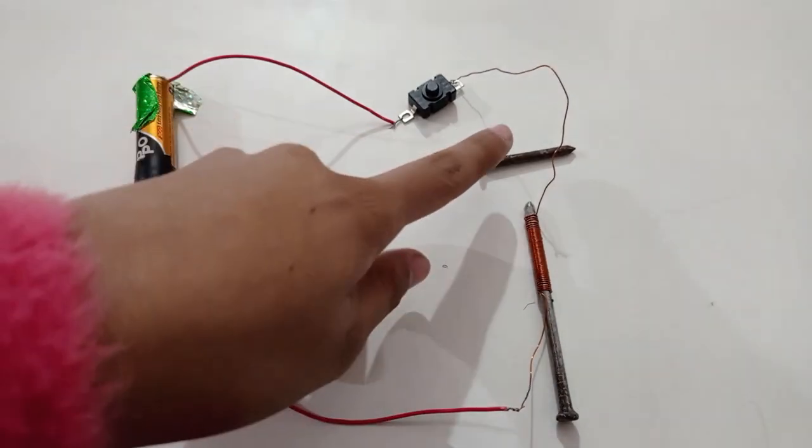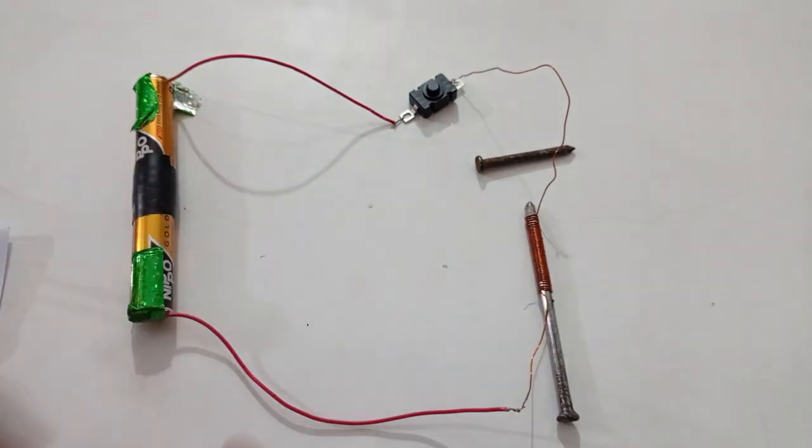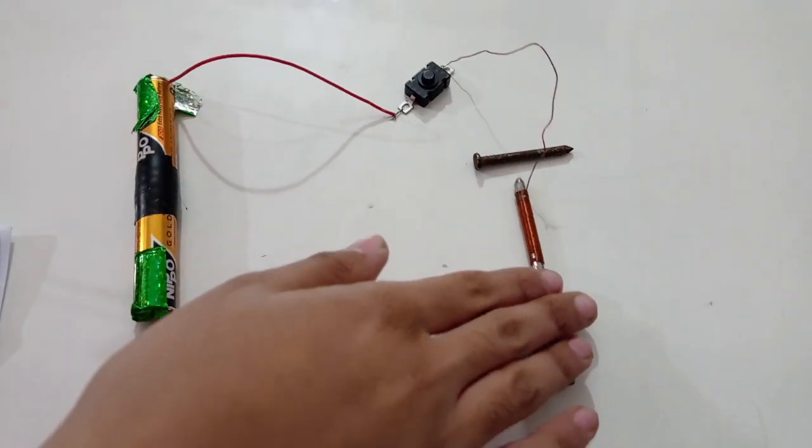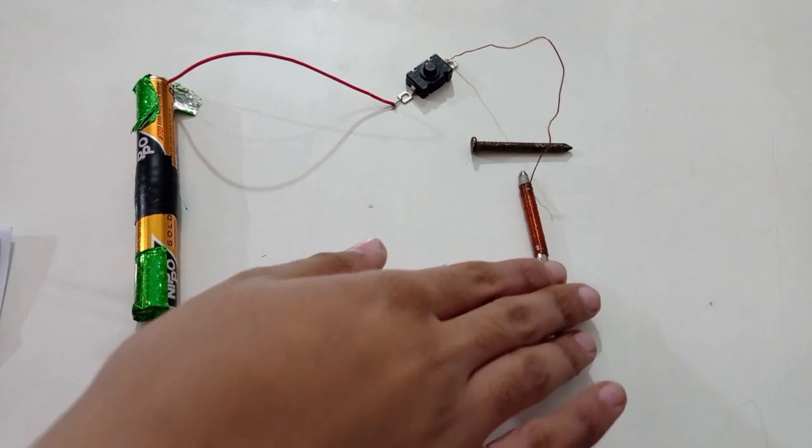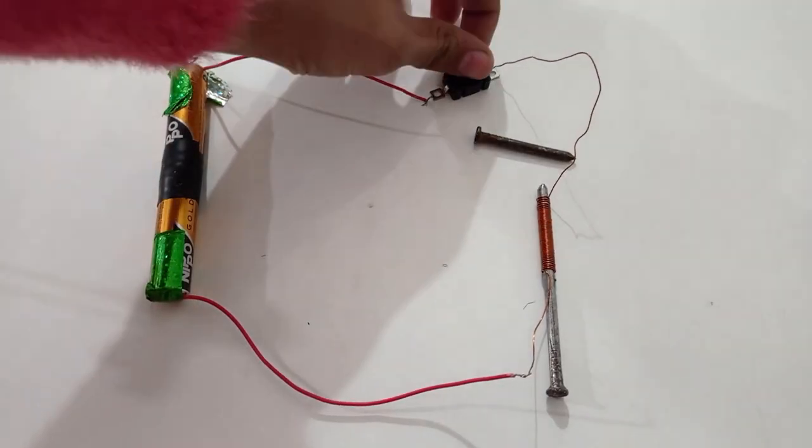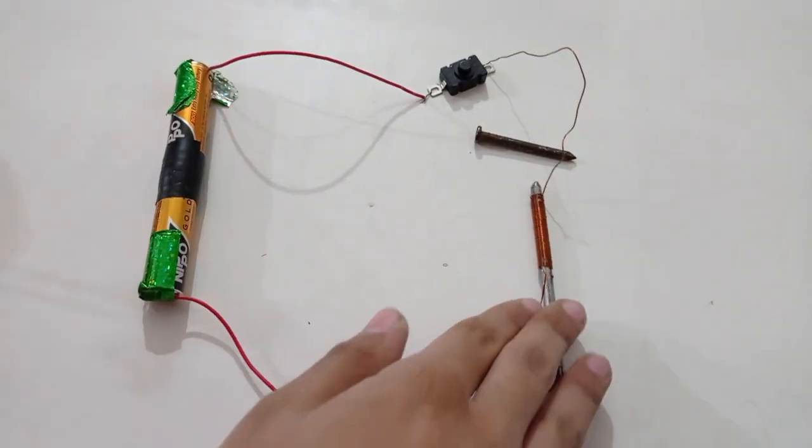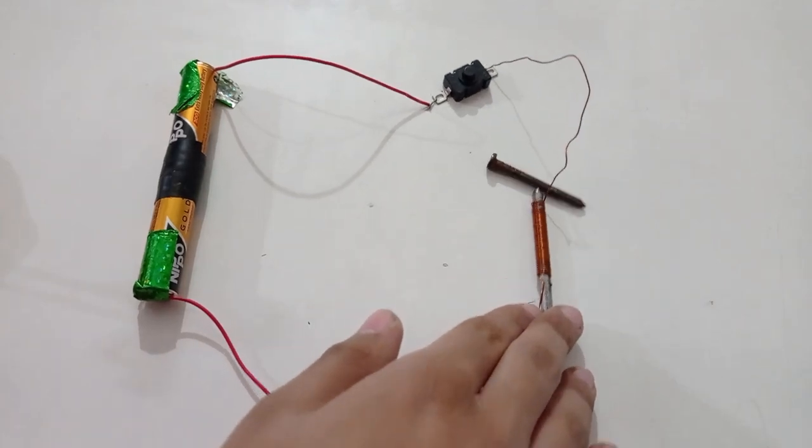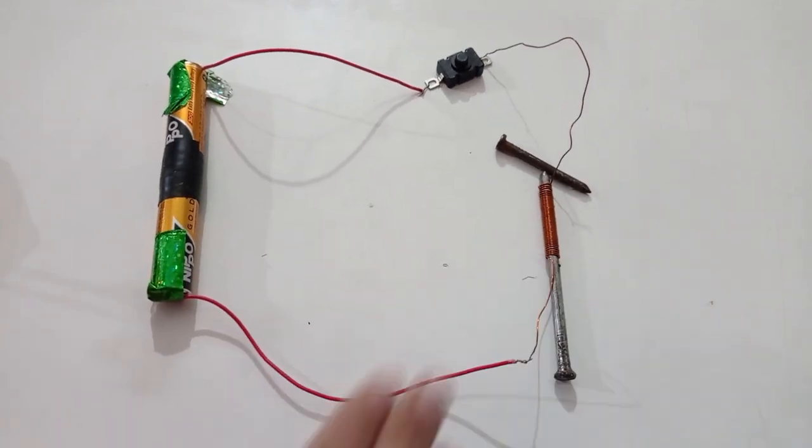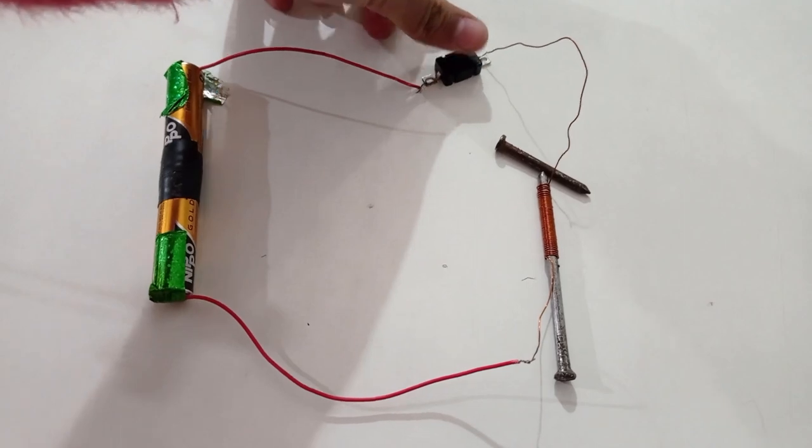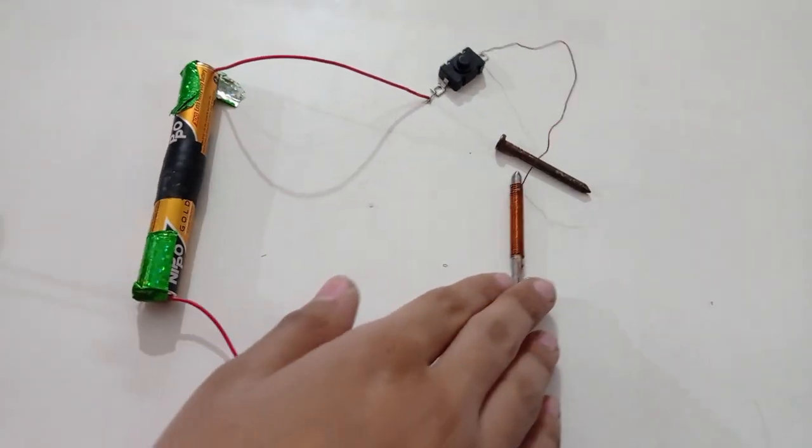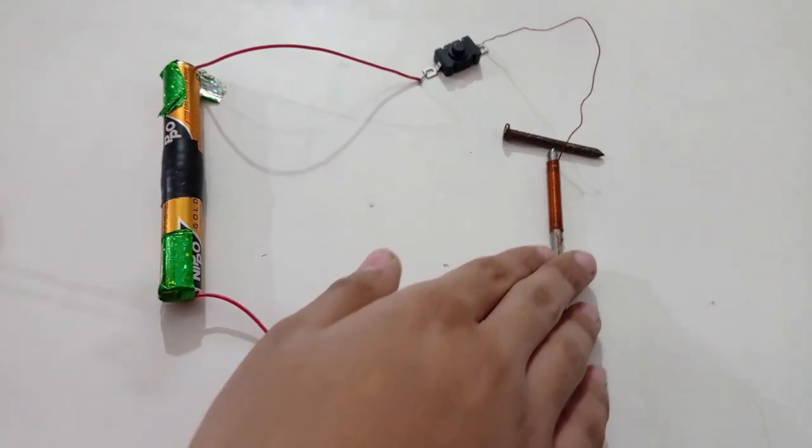Place a few small iron articles near the nail. As we can see, they don't cling to the nail. Now, turn on the current and we will observe that the nail behaves like a magnet. Again, turn the switch off and we observe that the nail no longer shows magnetic properties.